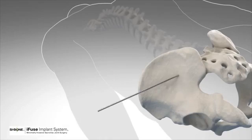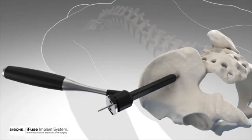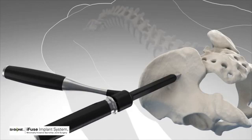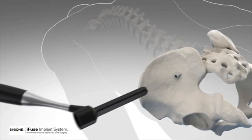The IFUSE procedure involves making a small incision, usually three centimeters or less, over in the hip area, and then placing three triangular shaped titanium implants across the SI joint with the purpose of stabilizing it and ultimately fusing it. This is what leads to pain relief.